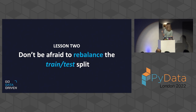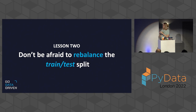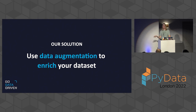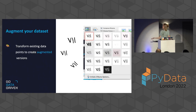That taught us our second lesson: don't be afraid to rebalance the train/test split. We were given some training data and some validation data, and it would be easy to just keep it as-is. But sometimes it's a good idea to move data points from one set to another — to rebalance it. Next, we had to actually improve our dataset. We cleaned up labels, but how do we create new data points? An obvious approach is data augmentation: scaling, cropping, rotation, etc.